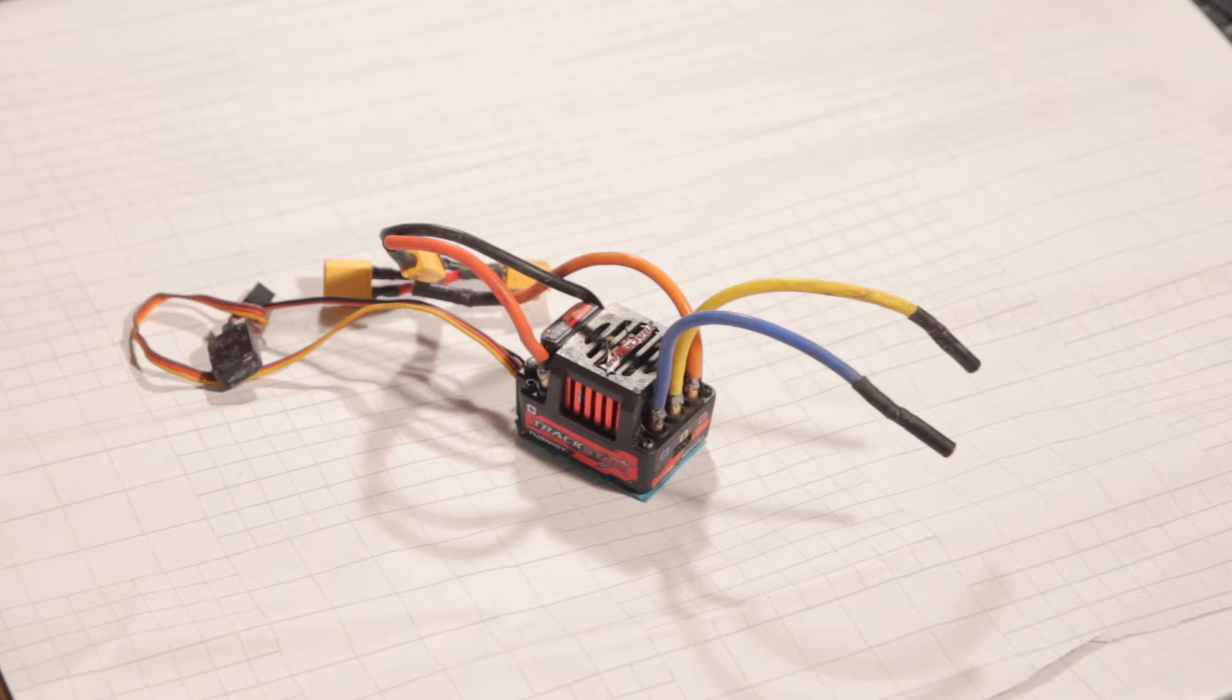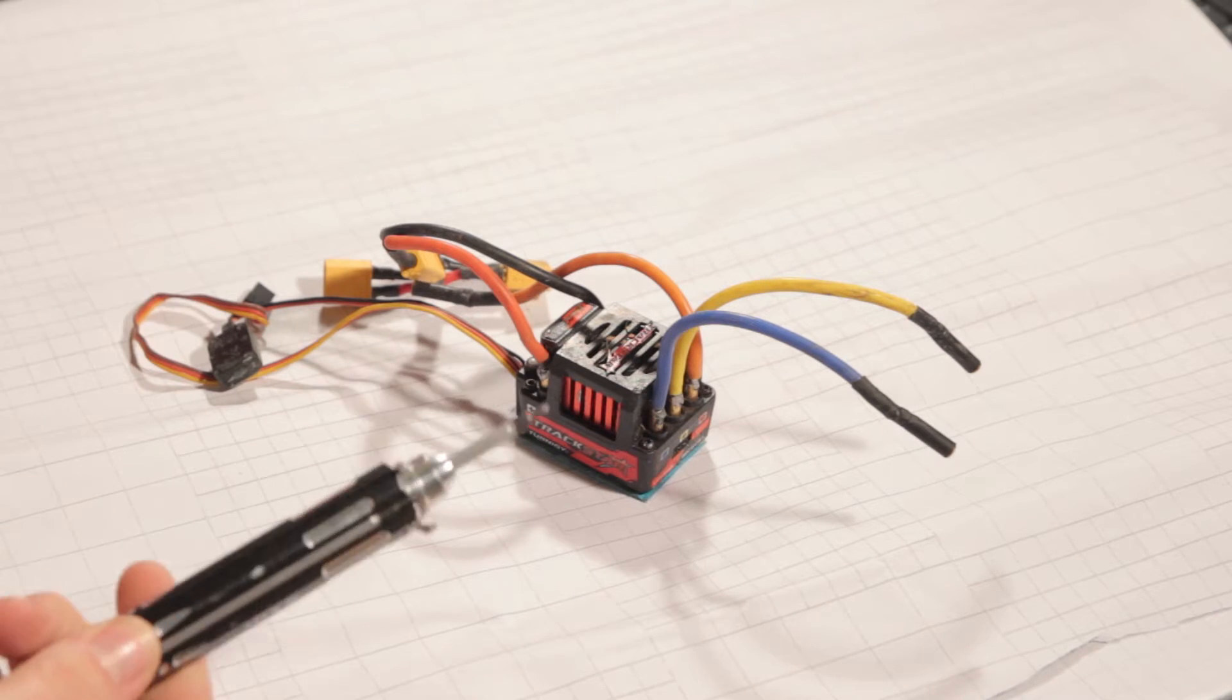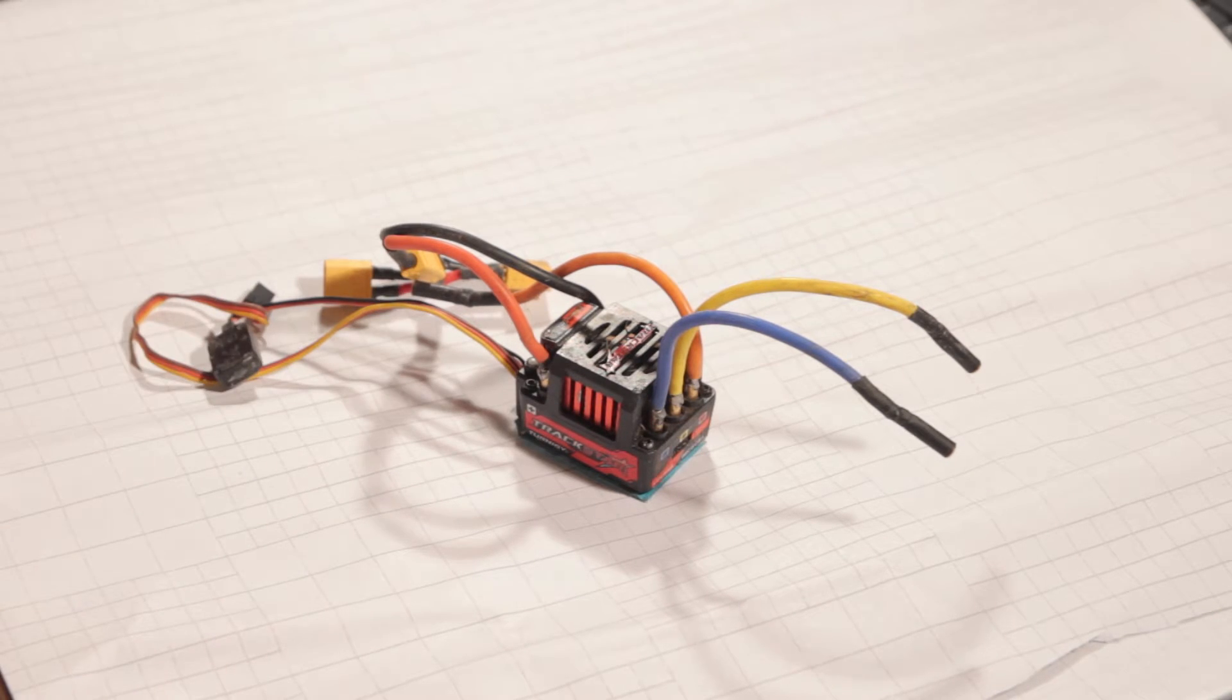The tools you're going to need, pretty standard stuff, whatever it takes to take your ESC apart, generally a Phillips screwdriver and maybe an Allen key of some sort, and then you need the products you're going to use to clean it and waterproof it.